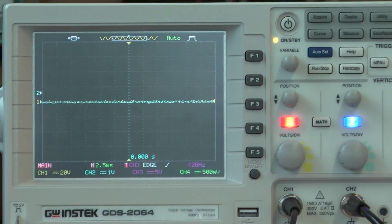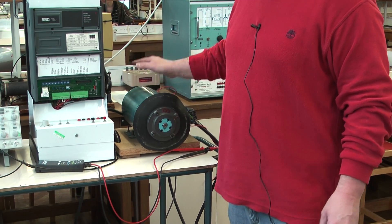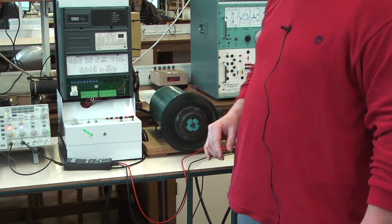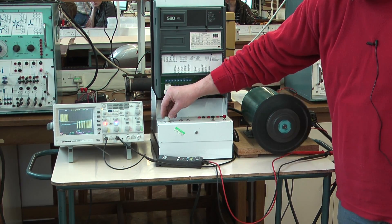The point of the inverter motor drive is that we can have variable speed out of this machine. So we can turn it on, and there we go, we're running at a slow speed. We can turn up the speed and it goes faster.